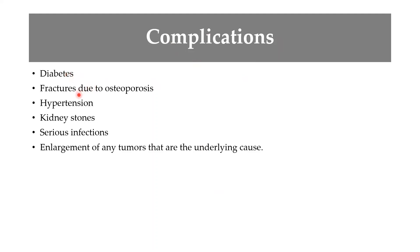Complications of Cushing's syndrome include diabetes mellitus, osteoporosis leading to fractures, hypertension, kidney stones, and serious infections. If left untreated, enlarging tumors can continue to grow and cause further problems.